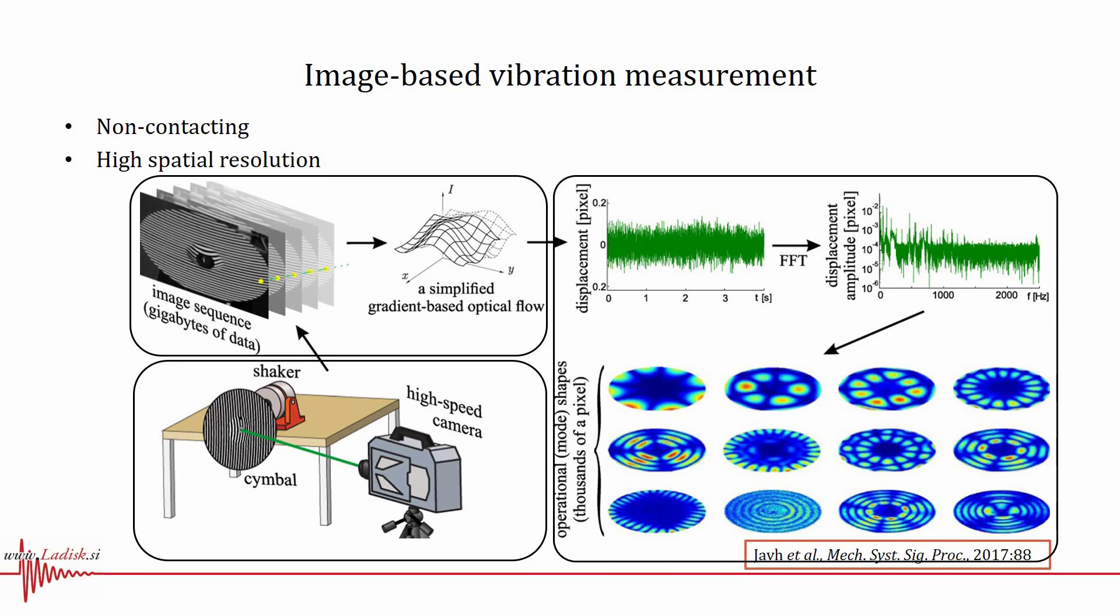Using a single high-speed camera, only planar vibrations of the observed object can be identified. Our objective, however, are spatial vibration measurements for which stereo or multi-view imaging systems are typically required.